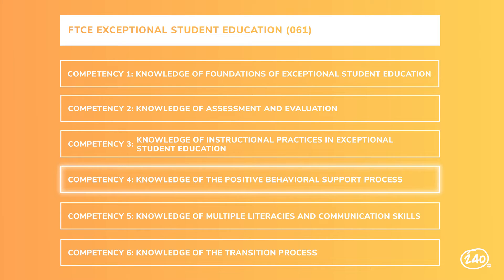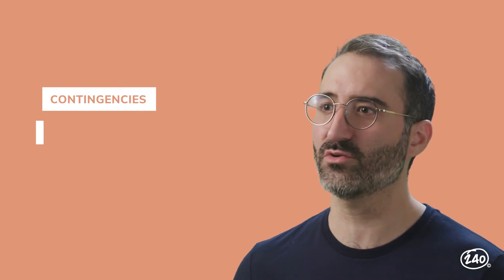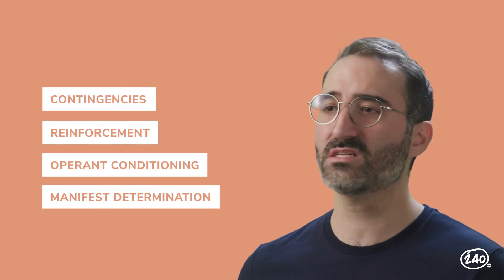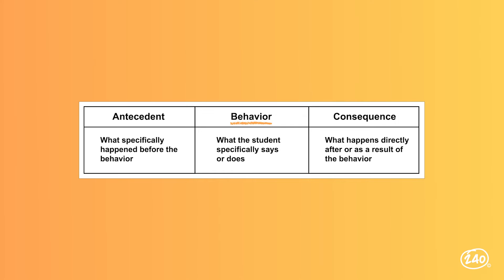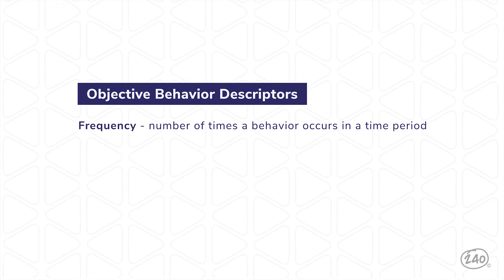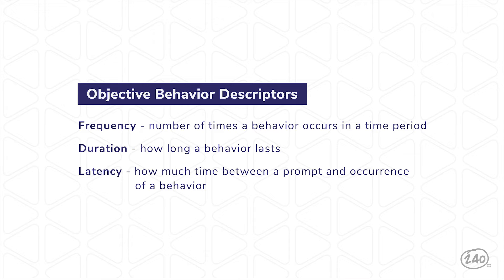Competency 4 is all about the positive behavioral support process and student behavior. You'll be asked about topics like contingencies in different contexts, different types of reinforcement, operant conditioning, and manifest determination. Before a plan can be made to improve a student's behavior, data must be collected to understand that behavior. Along with the actual behavior, antecedents and consequences are observed and documented. The antecedent is what specifically happened before the behavior — sometimes called a trigger. The consequence is what happens directly after the behavior. Behavior is also described by frequency, duration, latency, and intensity.